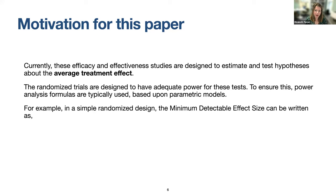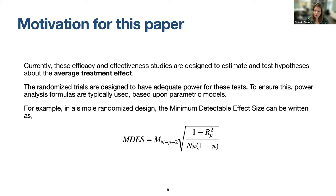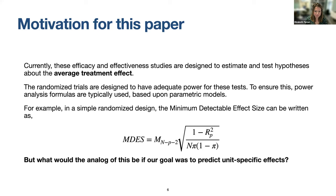There are programs like PowerUp and the Generalizer that have power analysis built in. The expectation in a grant proposal is that you've planned your study with statistical power. In a simple randomized design, which I'll focus on today, the minimum detectable effect size is a function of a multiplier, the sample size, the proportion in treatment, and an R-squared for covariate adjustment. The motivating question is: what would the analog to this be if our goal was to predict unit-specific effects?